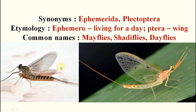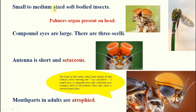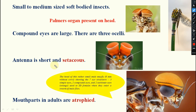Mayflies are very tiny insects — small to medium-sized, short-bodied insects. Palmer's organs are present on the head — very important. Compound eyes are larger, and there are three ocelli. Antennae are short and setaceous.